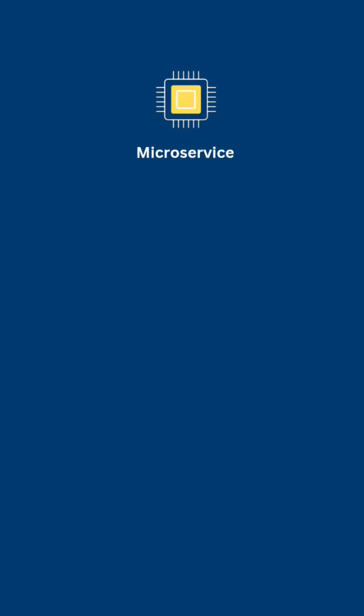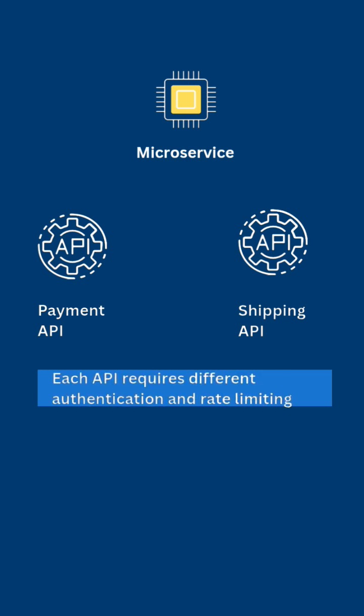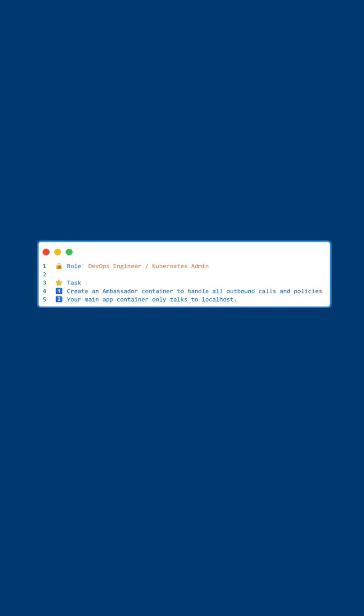You have a microservice that needs to talk to multiple external APIs like a payment API or shipping API. Each API requires different authentication and rate limiting. So you decide to create an ambassador container to handle all outbound calls and policies, while your main application container only talks to localhost.